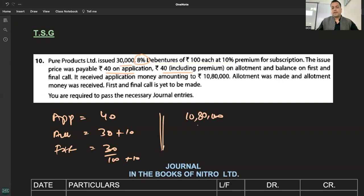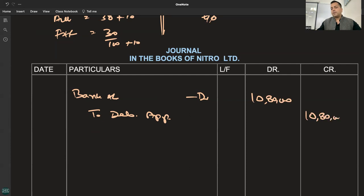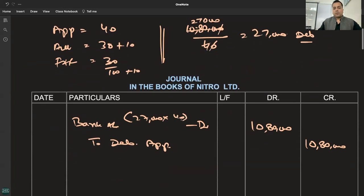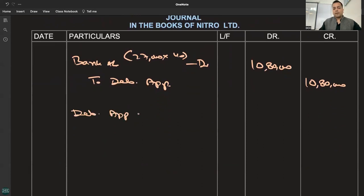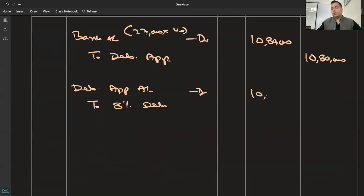Application money: 10,80,000. Application money is 40 rupees, so how many shares? 27,000 debentures. 27,000 debentures under subscription. Bank account debited to debenture application: 27,000 into 40 rupees. Bank to debenture application, the debenture application to 8% debentures.